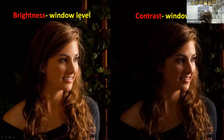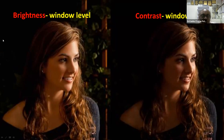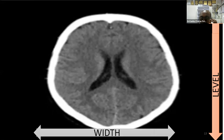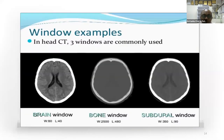We need to understand window width and window level. Brightness of the full image is known as the window level. Contrast refers to differences within the image. To change the window, select the window panel in your imaging system — drag the mouse horizontally to change contrast, and drag vertically to change the level or brightness.